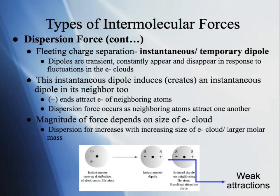This instantaneous dipole induces or creates an instantaneous dipole in its neighbors too. For example, if one molecule has a slight positive charge on one end, it's going to attract a slightly negative charge on a different molecule — it will push those electrons away in the other molecule. They can create an instantaneous dipole in their neighbors as well.